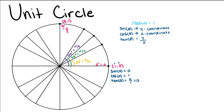At the point (0, 1), we can do the same thing. Here our angle measurement is 90 degrees. So the sine of 90 is 1, the cosine of 90 is 0, and the tangent of 90 is 1 over 0, or undefined, as we can't divide by 0.